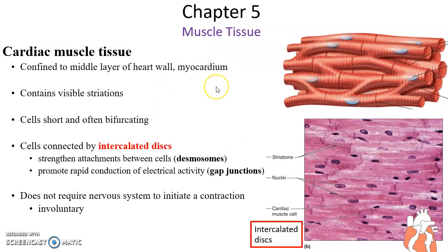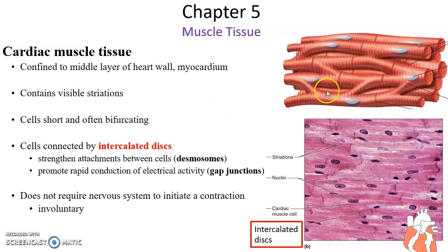Cardiac muscle tissue is found in the heart, in the middle layer of the wall of the heart — the myocardium. They also have striations, that dark-light banding pattern, which you can sort of see in this slide. The cells of cardiac muscle tissue are shorter and they are often bifurcated — they'll branch a bit. When two cardiac muscle cells come together, there is a structure called an intercalated disc. These dark lines here represent the intercalated discs formed between cardiac muscle cells.